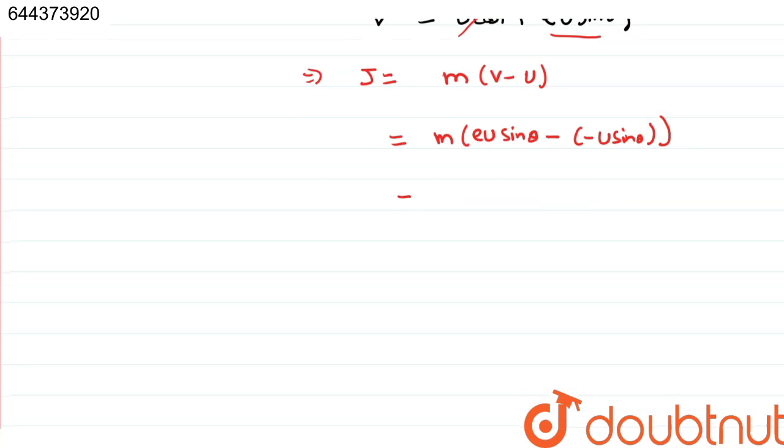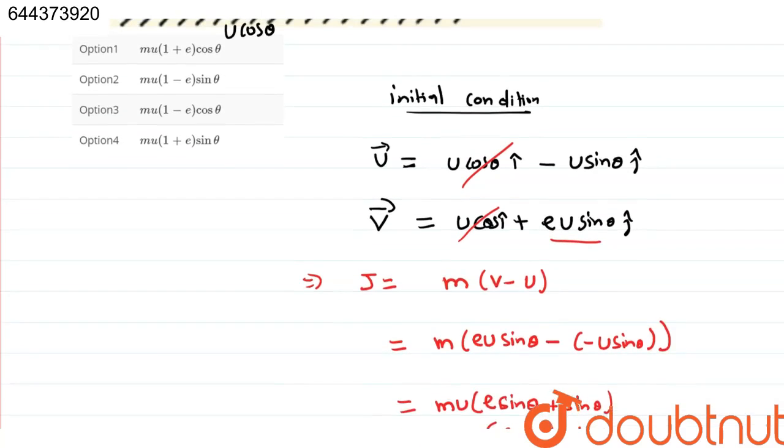So, we get taking u common, we get e sin theta plus sin theta. So, we get mu, it will be mu times e plus 1 sin theta, mu e plus 1 sin theta.